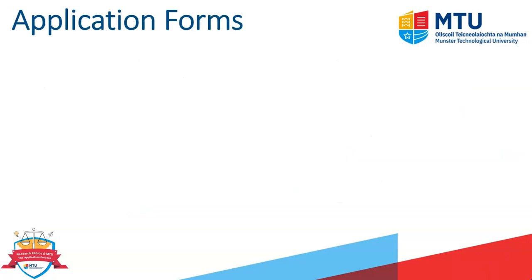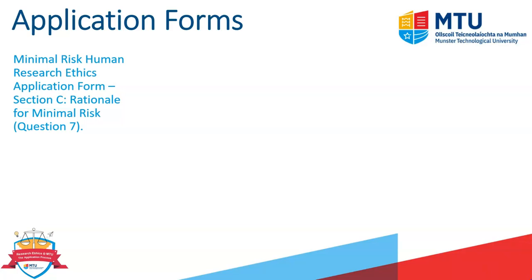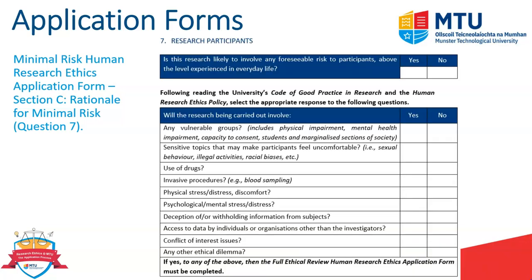For all these videos, I try to look at how the topic fits with the actual application form. In relation to the minimal risk human research ethics application form, in section C question seven, it asks if there is any risk above the level of experience in everyday life for the actual human participant — yes or no. If it's yes, then a full ethical review human research ethics application form must be completed. The exception would be if the procedure for carrying out the research study was pre-approved by the human research ethics committee, in which case the minimal risk form would still be applicable.